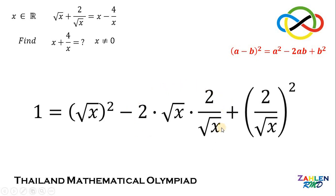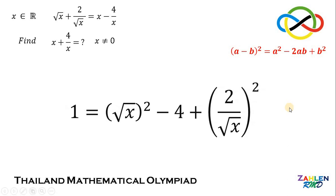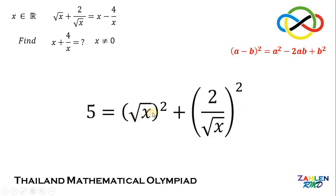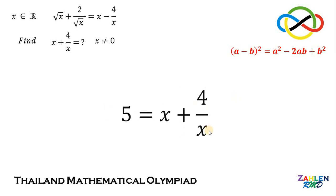Now let's focus on the middle term. Square root of x on the numerator and denominator cancel out, so this gives us negative 2 times 2, or simply negative 4. Now, add 4 on both sides. This gives us 5 equals square root of x, quantity squared, plus 2 over square root of x, quantity squared. Here comes the exciting part: square root of x, quantity squared, is just x, and 2 over square root of x, quantity squared, is just 4 over x — and that's exactly what we need to find.